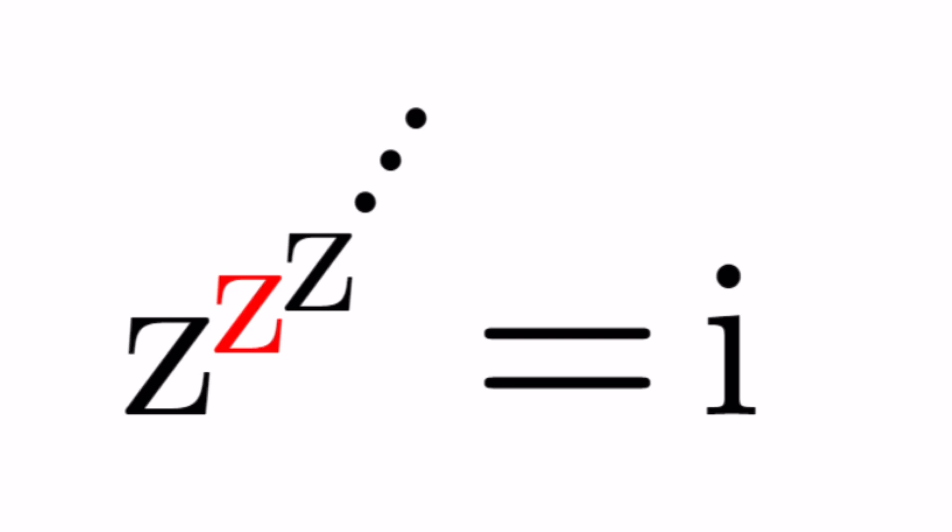So we have this infinite exponential tower of z's and the whole thing is equal to i which is the imaginary unit. How do you solve for z?